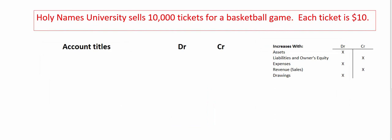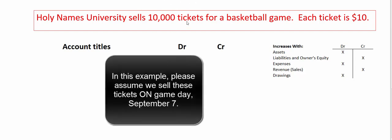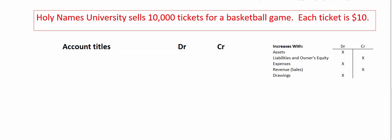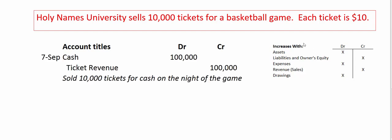Let's refresh our memories with a transaction that doesn't involve unearned revenue. Let's say Holy Names University sells 10,000 tickets for a basketball game; each ticket is $10, so that's $100,000. The journal entry: cash is increasing so we debit cash, and we credit a revenue account. We debit cash for $100,000 and credit ticket revenue. Ticket revenue increases with credits and keeps track of our sales whether we get paid today, tomorrow, or never — in this case we got paid on the day of the game.